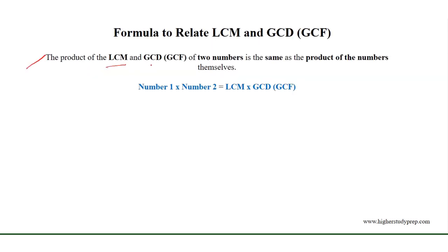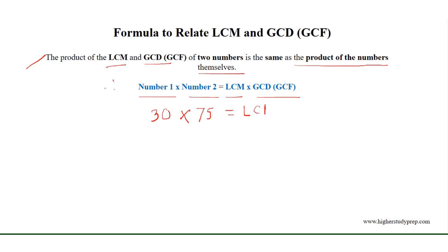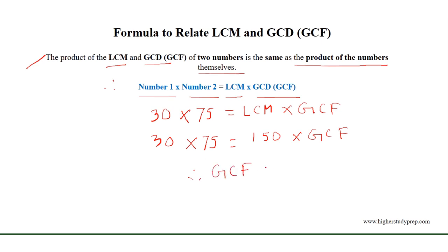The product of the least common multiple and the greatest common divisor of two numbers equals the product of the numbers themselves. Therefore, number 1 times number 2 equals LCM times GCD. If we consider 30 and 75, then 30 times 75 equals the least common multiple times the greatest common factor. Since the LCM of 30 and 75 is 150, we get 150 times GCD equals 30 times 75, which gives the greatest common divisor of 30 and 75 equals 15, as obtained earlier.